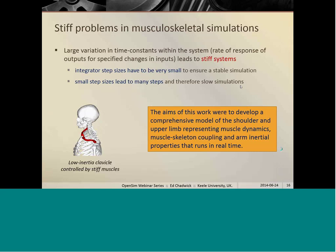And the aim of this work really was to develop a comprehensive model of the shoulder and elbow, shoulder and upper limb, that represents muscle dynamics, muscle-skeleton coupling, and arm inertial properties, and that runs in real time.